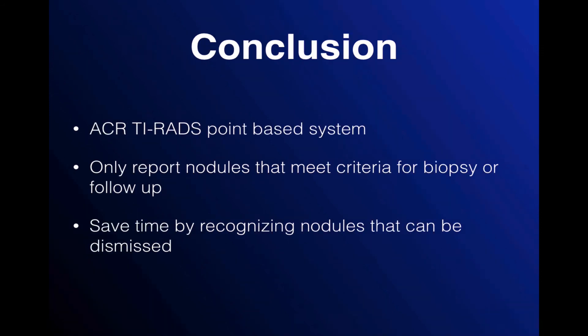In summary, ACR TIRADS is a points-based risk stratification system. You only need to report nodules that meet criteria for biopsy or follow-up, and you can save time by recognizing nodules that can be dismissed — TIRADS 1, 2, and some TIRADS 3 nodules. Thanks for listening. Share it with friends and colleagues if you found it helpful, and check out the ACR website for many more resources on ACR TIRADS.